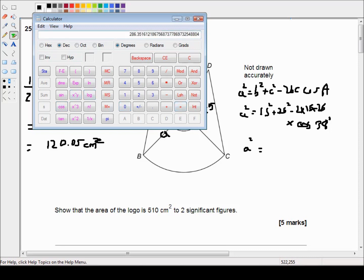And that's all equal to 286.35. And then I'm just going to find the square root. That's 16.92.